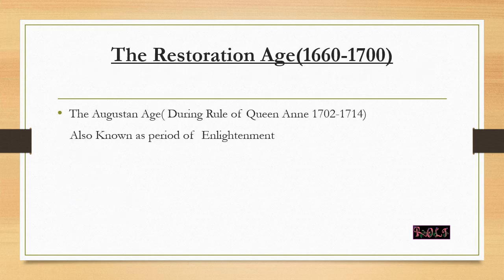After the Renaissance, from 1660 to 1700, we have the Restoration Age, also called the Augustan Age. During this period we also see the rule of Queen Anne from 1702 to 1714. This period is also referred to as the neoclassical age.